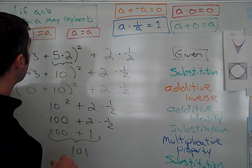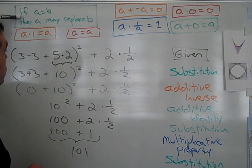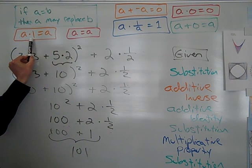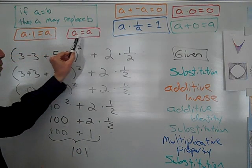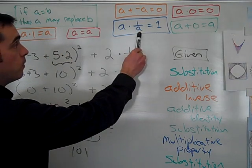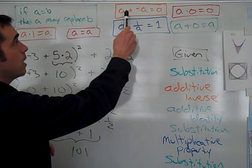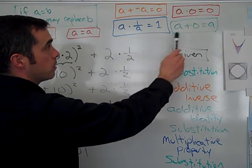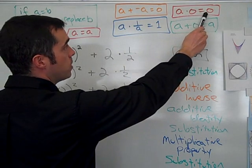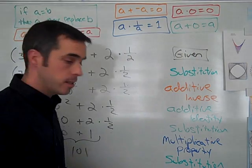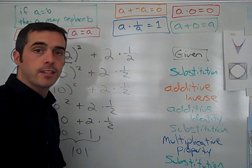In review, this is the substitution property, the multiplicative identity, the reflexive property, the multiplicative inverse property, the multiplicative property of 0, and the additive identity. Thank you.